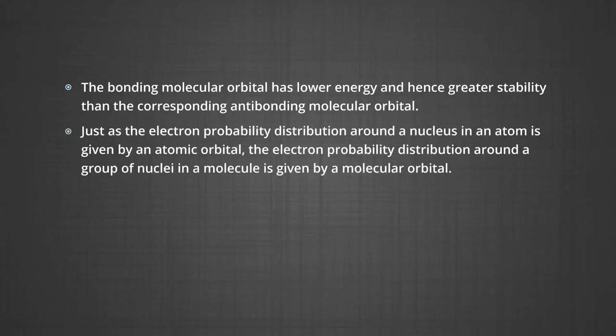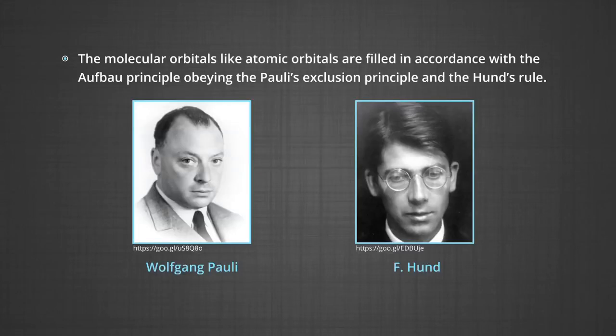Just as the electron probability distribution around a nucleus in an atom is given by an atomic orbital, the electron probability distribution around a group of nuclei in a molecule is given by a molecular orbital. The molecular orbitals, like atomic orbitals, are filled in accordance with the Aufbau principle, obeying the Pauli exclusion principle and Hund's rule.